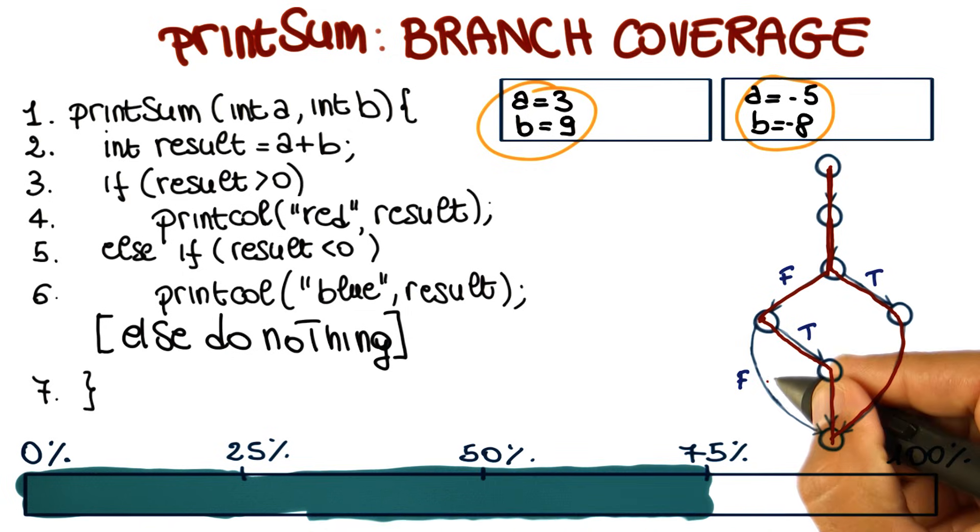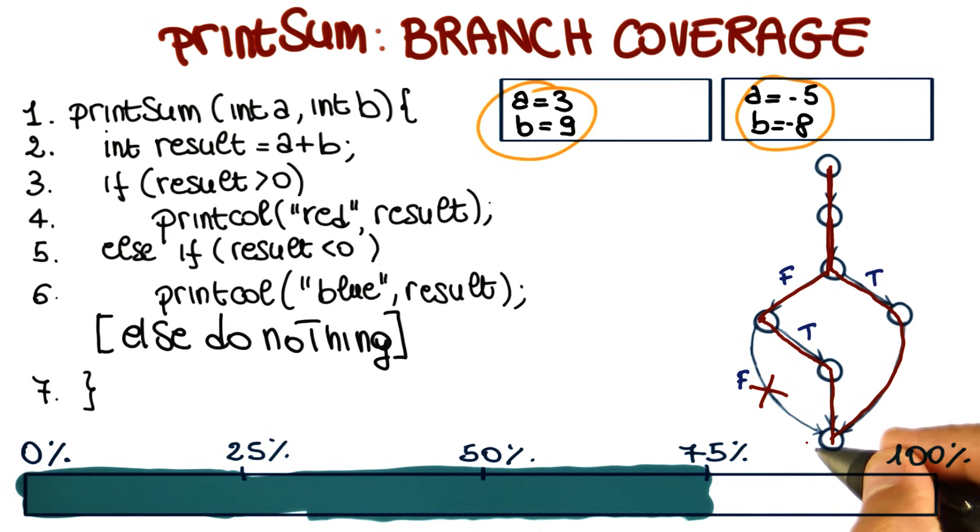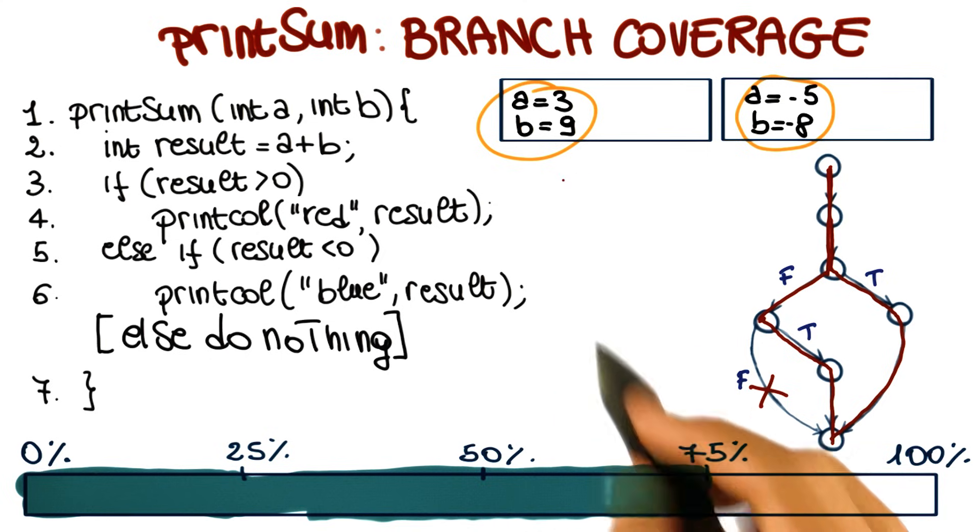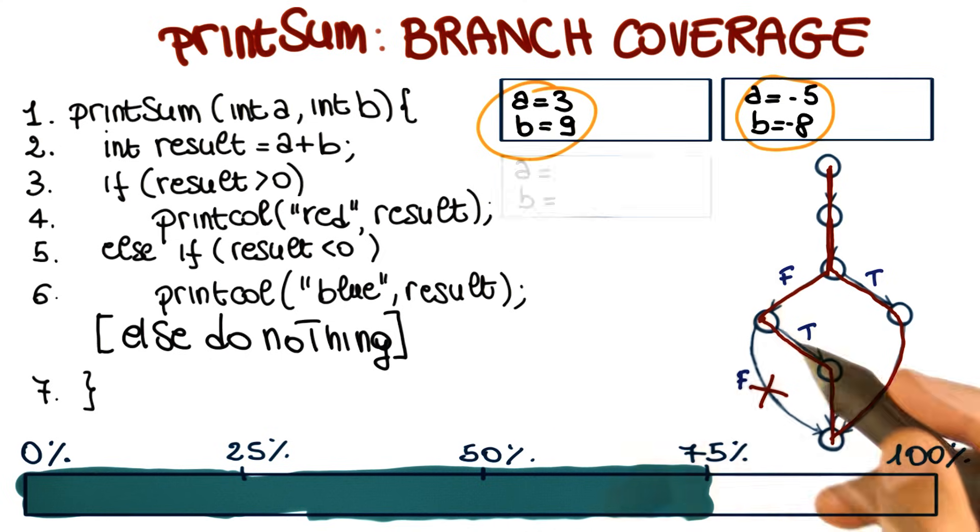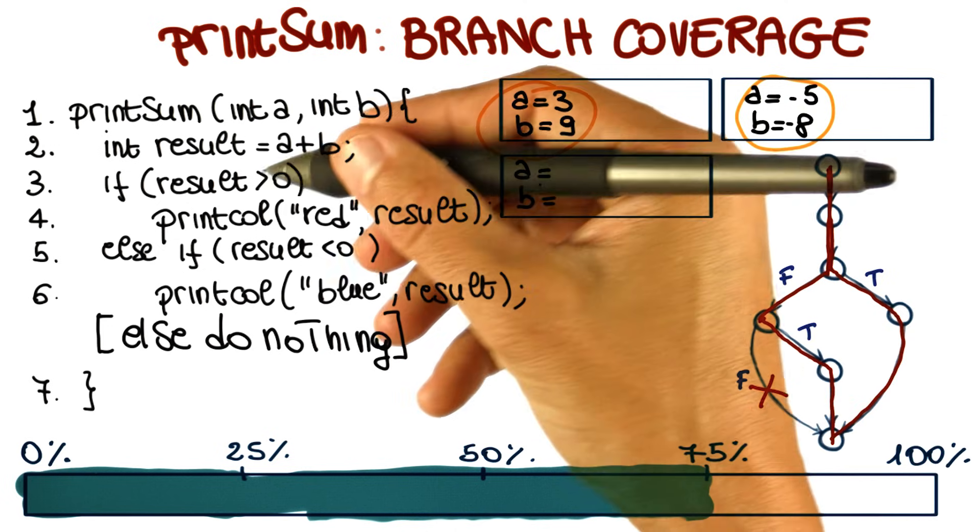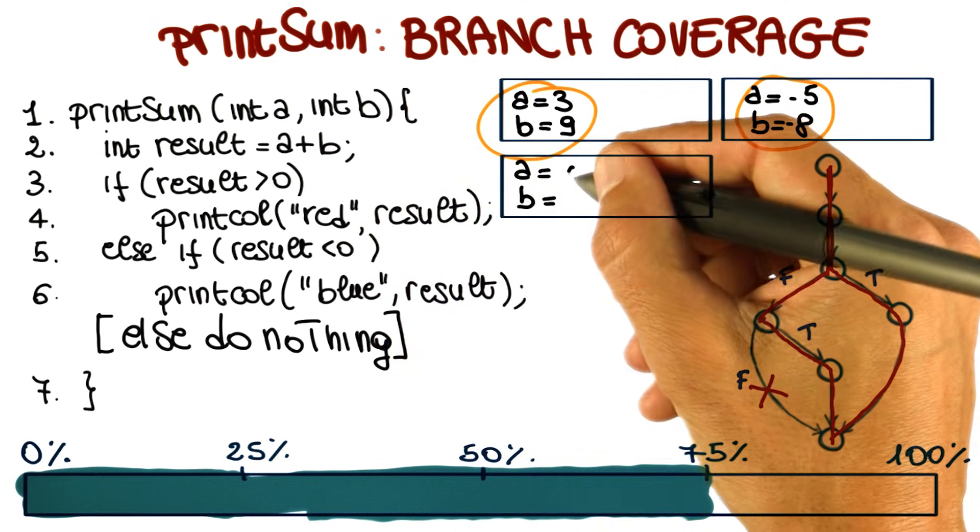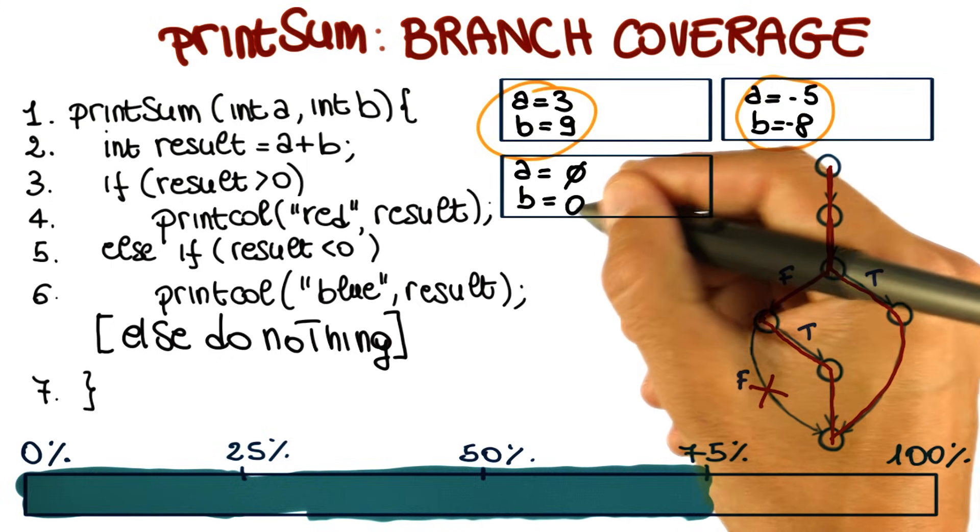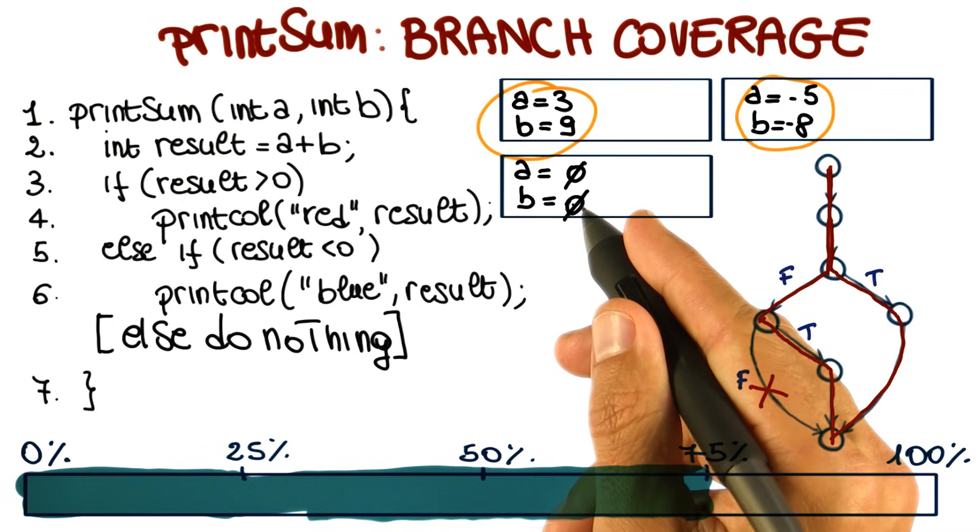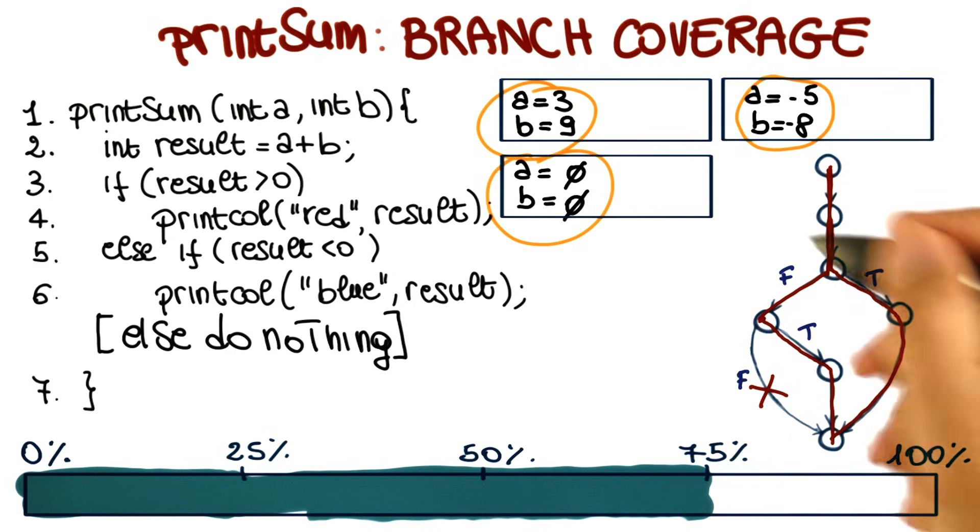So what happens is that we're missing this branch. For none of the inputs that we consider is this branch executed. Therefore, we need to add an additional test case. The test case that we need is one for which this predicate is false and this predicate is false. The simplest possibility in this case is a test case for which A is equal to zero and B is equal to zero.